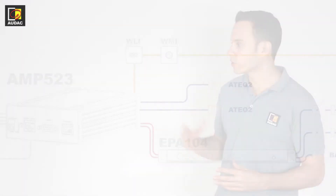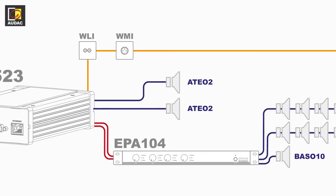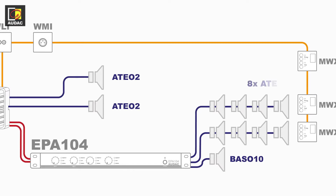The ATEO-2 loudspeaker is a nice option to have connected to your amplifier. The line output is connected to an EPA-104 with 8 times ATEO-2 and 1 time BASO10.